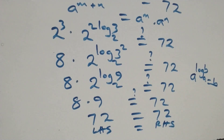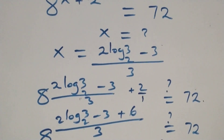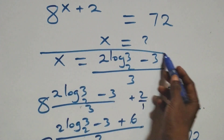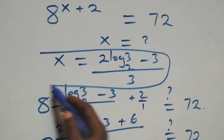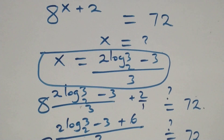Therefore, we conclude that x equals (2 log₂3 − 3) / 3 satisfies the given problem. Thank you for watching. Don't forget to subscribe for more videos and turn your notification bell on, give a thumbs up, share this video, and put your comments. See you next class. Bye for now.